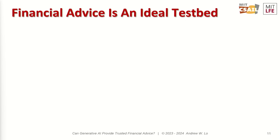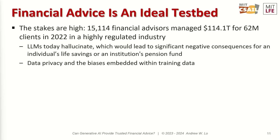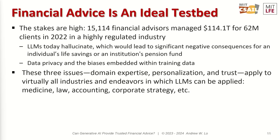Financial advice is not the only thing we're focusing on, although it is an ideal test bed. We have about 15,000 financial advisors in the country managing something like $114 trillion for 62 million clients — and far more people need advice that aren't getting it. Bad advice can cause harm and disclose private information. These issues are relevant not just for financial advice, but for all kinds of human interactions: medical advice, accounting, legal — virtually any type of knowledge transfer.